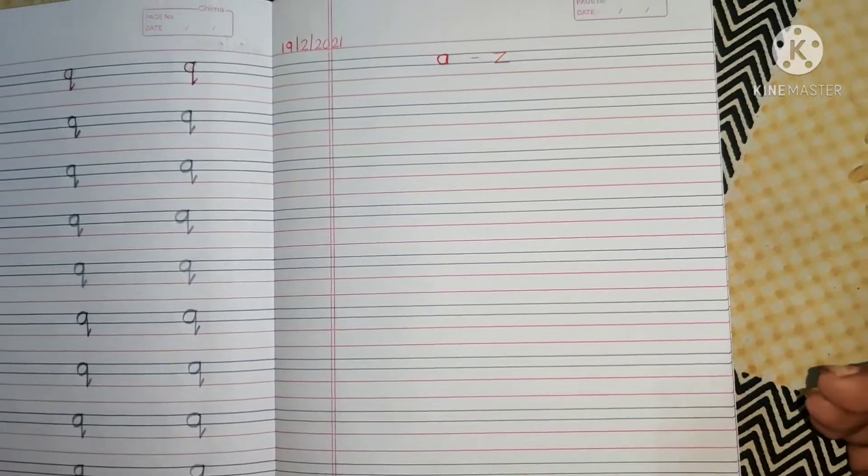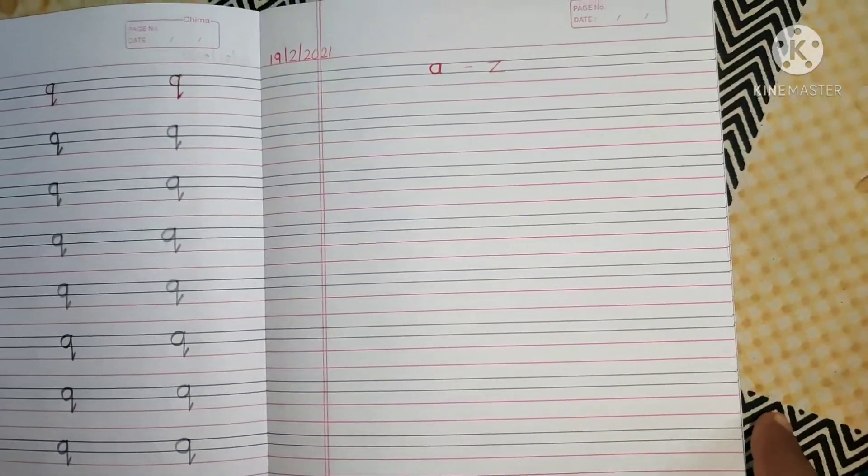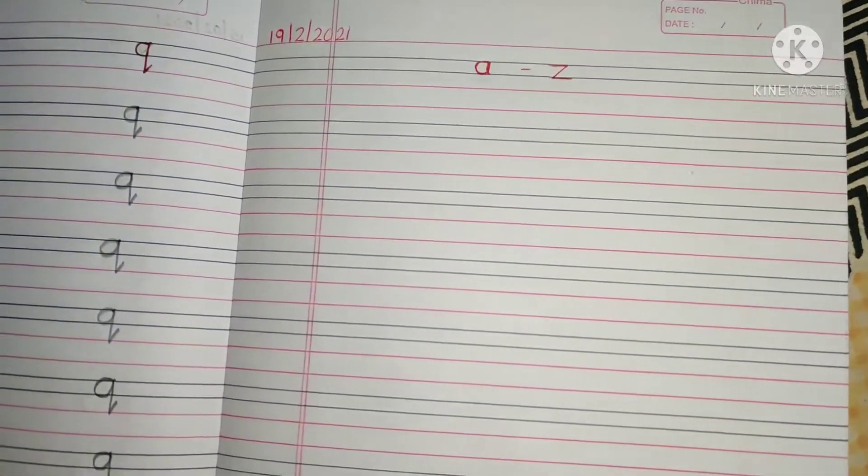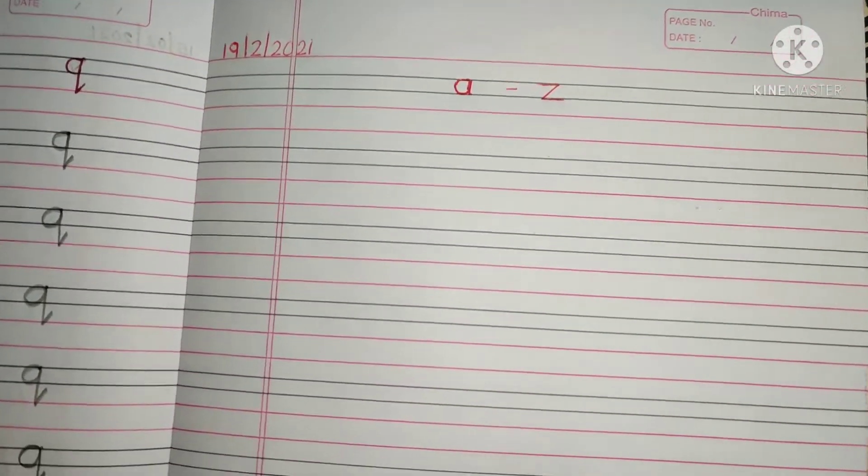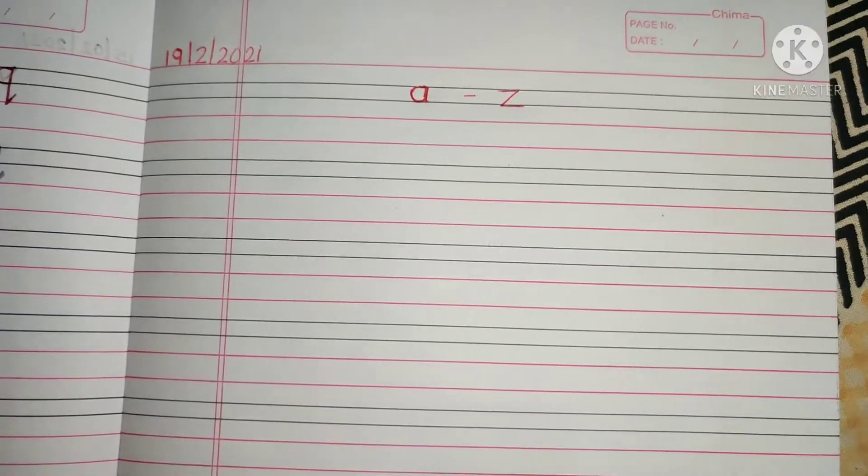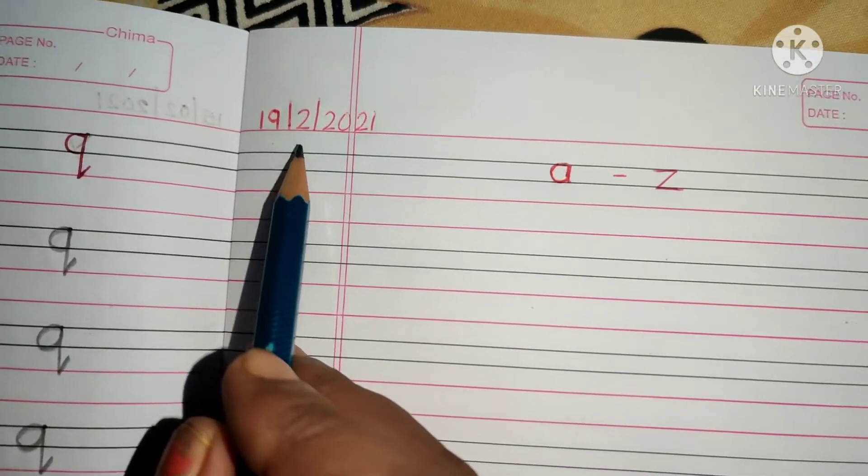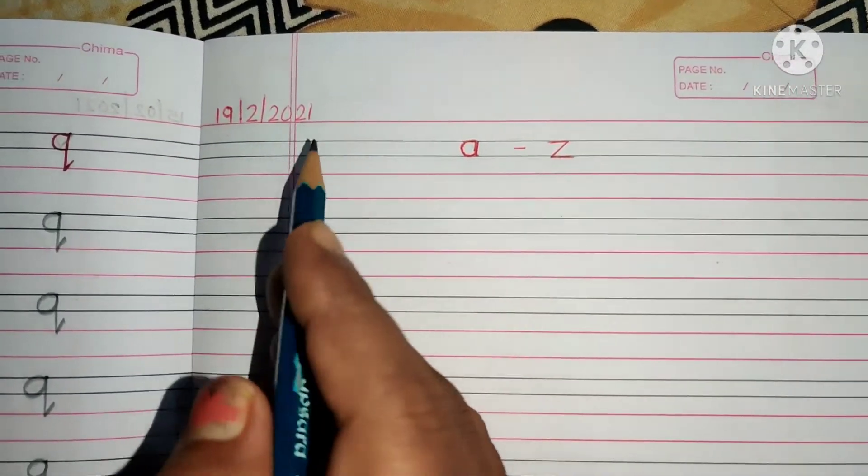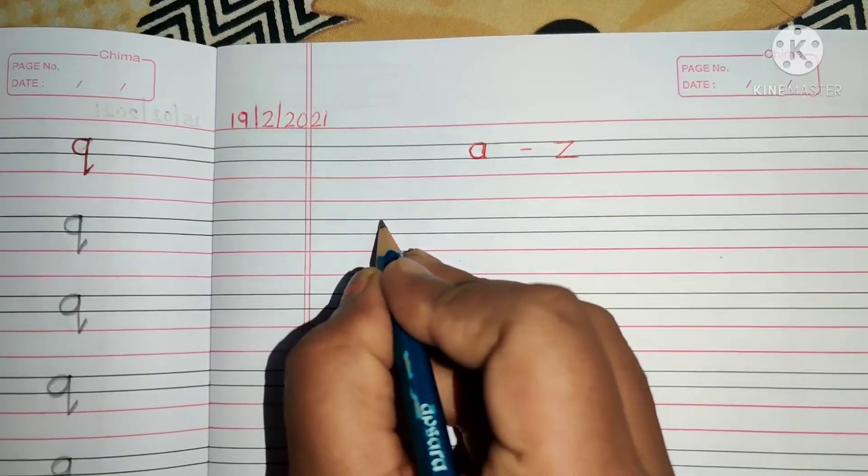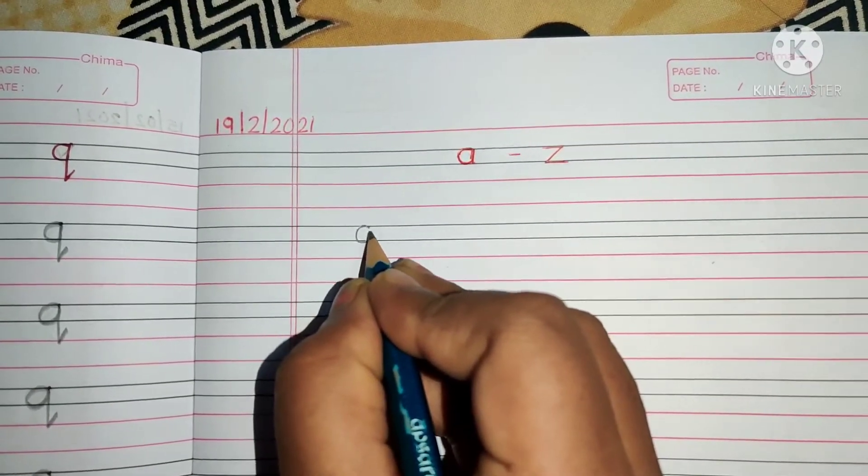Good morning Therubians, welcome to English writing class. Today we are going to write A to Z as we have completed it. We are going to write in our notebook. Before that, write today's date: 19th of February 2021. The first letter is A.